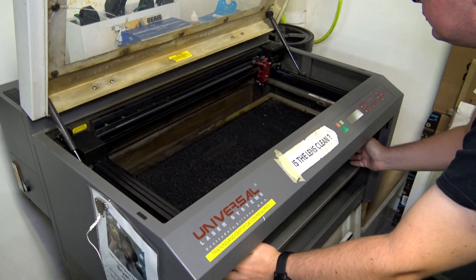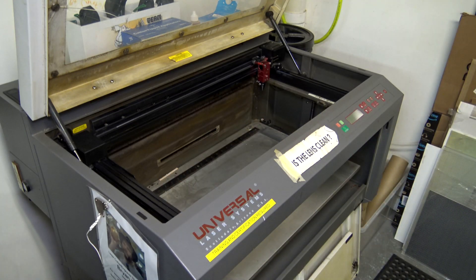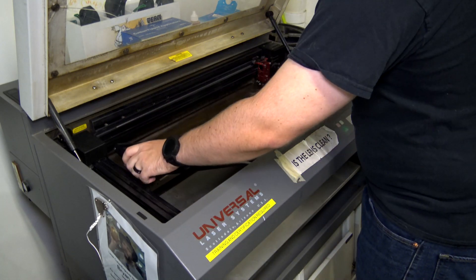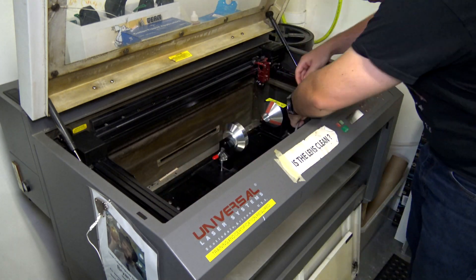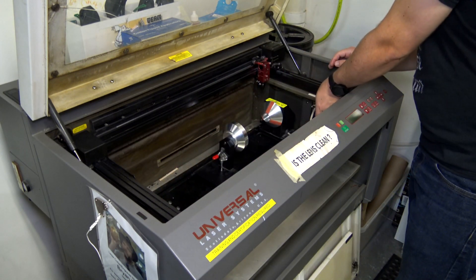It's easy enough to install in the machine. You just have to remove the old flat honeycomb bed surface and insert the new rotary attachments and then plug it in and we're good to go.